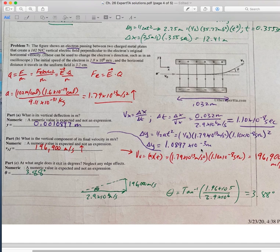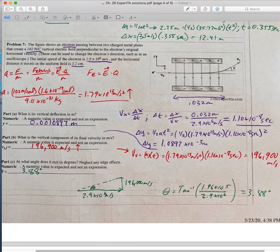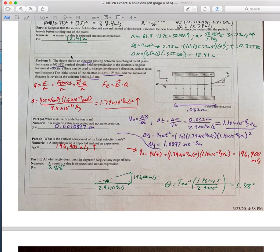And then to find the vertical speed here, take the acceleration and multiply it by time. End up getting that. And then to find out the angle it exits, horizontal speed, vertical speed. Inverse tangent of the vertical divided by horizontal.